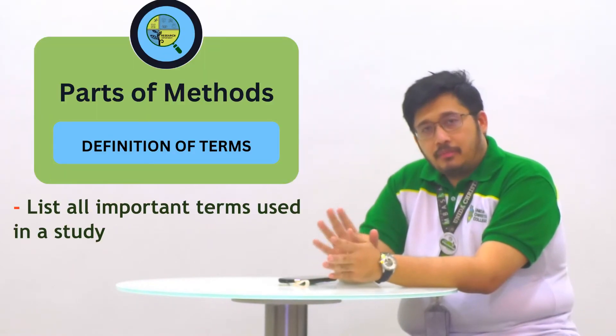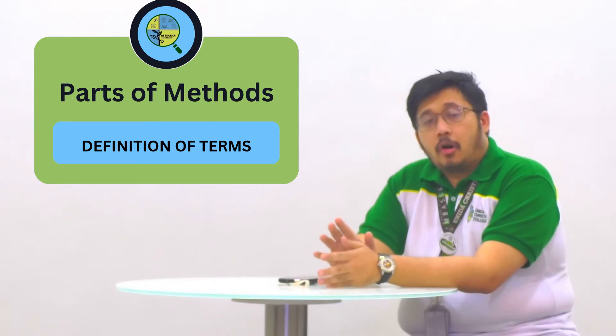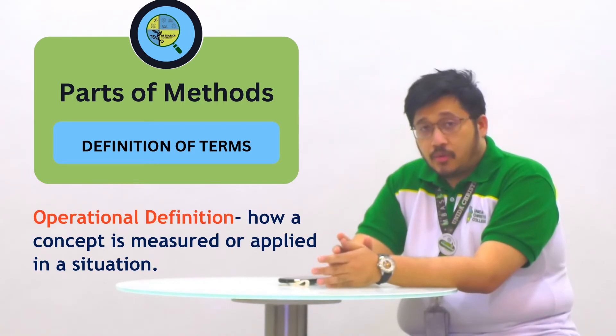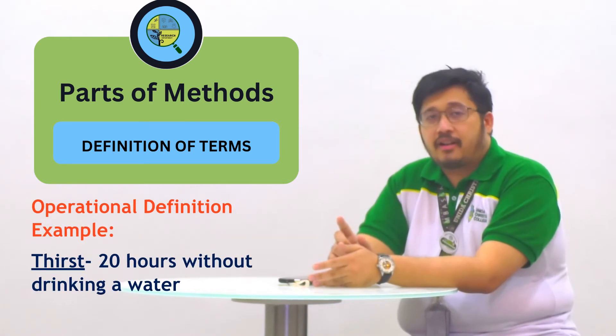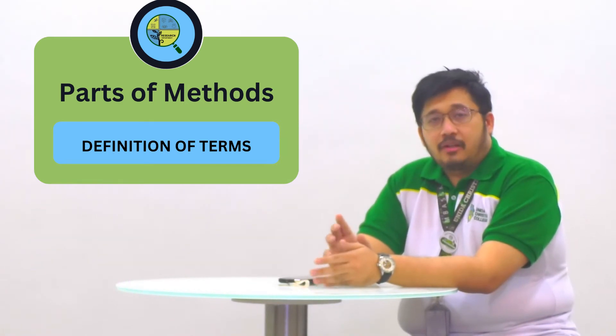Next, we have the definition of terms. Some reminders for this: when you define terminologies here, you have to use operational definitions. When you say operational definitions, this is how that term is used in your study. Do not, under any circumstances, use dictionary definitions. And also, another reminder: do not define obvious words. These are words that you no longer need a dictionary to get the meaning of.